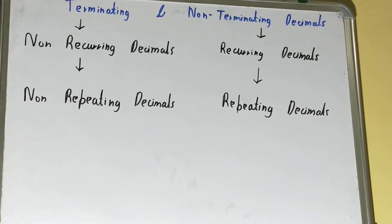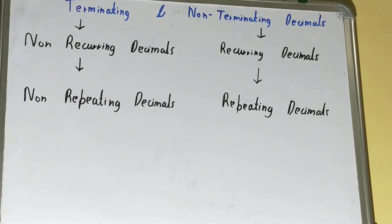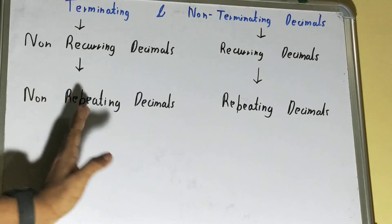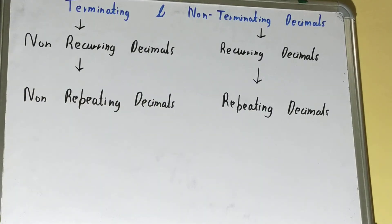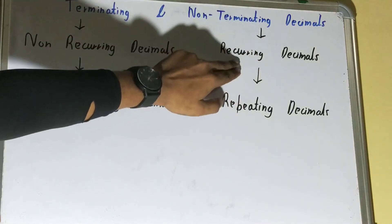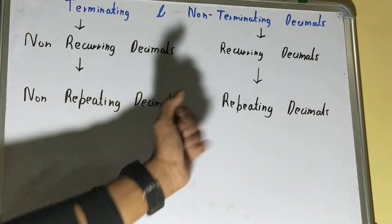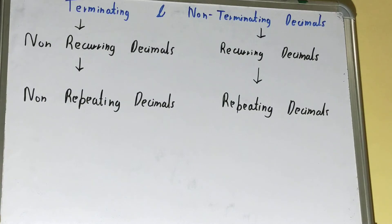Terminating decimals are also called non-recurring decimals because their remainder doesn't reoccur again and again — their remainder remains 0. They are also called non-repeating decimals because they don't have a non-zero value repeating again and again. Whereas non-terminating decimals are also called recurring decimals because they have a non-zero value that reoccurs again and again — as we saw, we kept getting remainder 2. The other word for them is repeating decimals.